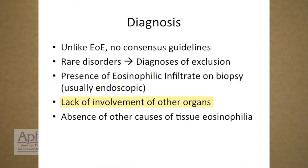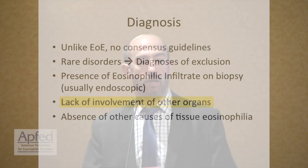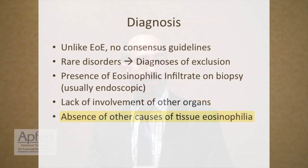You should also see lack of involvement of other organs. The eosinophilic gastrointestinal diseases should be limited to the gastrointestinal location or layer involved, and beyond that there really shouldn't be any other organ involvement. There should also be an absence of other causes of tissue eosinophilia. If there's a hypereosinophilic syndrome or another cause of eosinophilia, that should focus on treatment of that condition rather than a more rare condition.